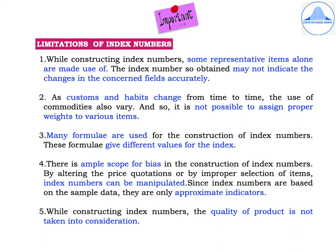Moving on to the limitations of index numbers. The first one is: while constructing index numbers, only some representative items are chosen, so the index number obtained may not indicate the changes in the concerned fields accurately. Second, as customs and habits change from time to time, the use of commodities will also vary, and so it is not possible to assign proper weights — that is, quantities — to various items.